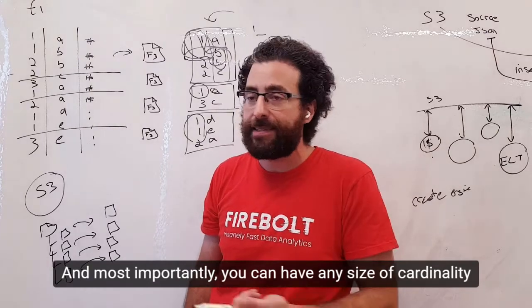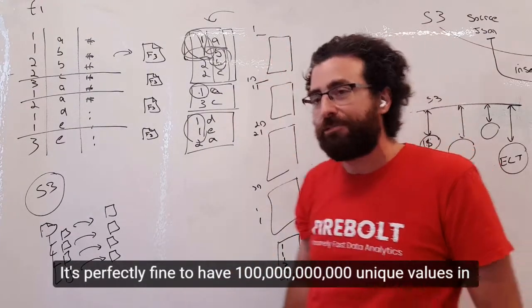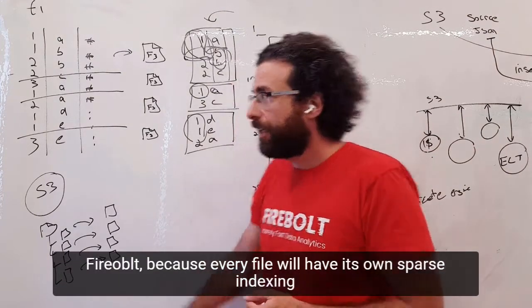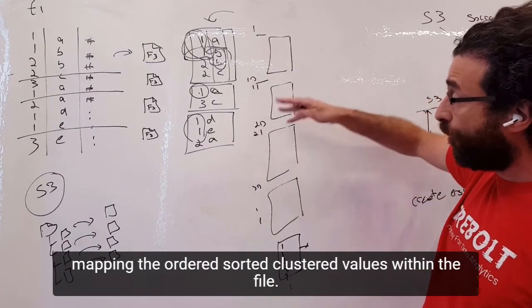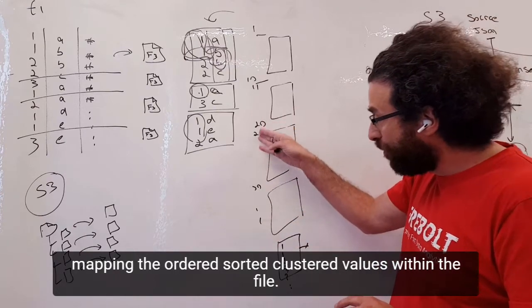Most importantly, you can have any size of cardinality in it. It's perfectly fine to have 100 billion unique values in Firebolt because every file will have its own sparse indexing, mapping the ordered, sorted, clustered values within the file.